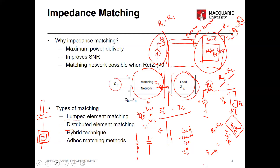Lumped elements can be lossy at higher frequencies because parasitic inductive and capacitive effects come into play. Distributed elements are preferred at higher frequencies — they are lower loss and comparable in size. In Ku-band or Ka-band designs it's much preferred to use distributed elements. Distributed elements can also handle higher power. Sometimes hybrid techniques are used, mixing lumped and distributed elements in ad hoc matching networks.